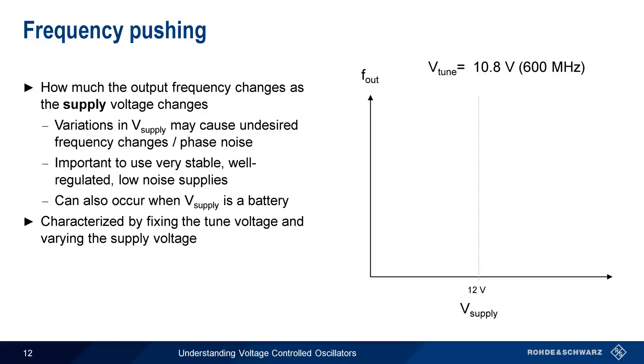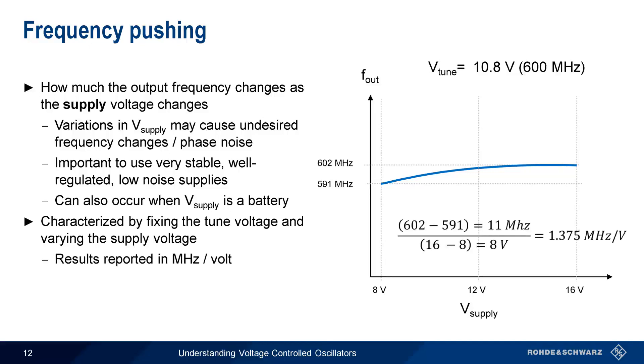but to test frequency pushing, we'll sweep the supply voltage between 8 and 16 volts, and record the output frequency over this voltage range. Here the VCO output frequency varies from 591 MHz to 602 MHz, and so our frequency pushing is 1.375 MHz per volt.